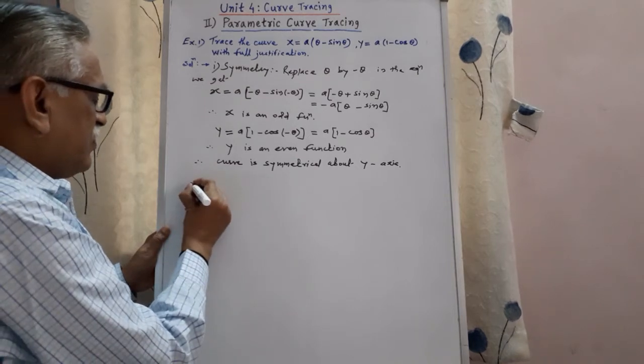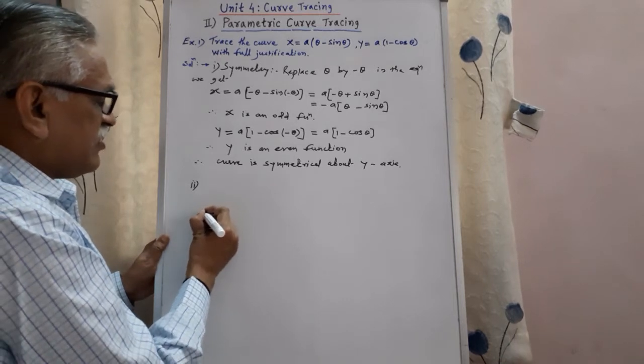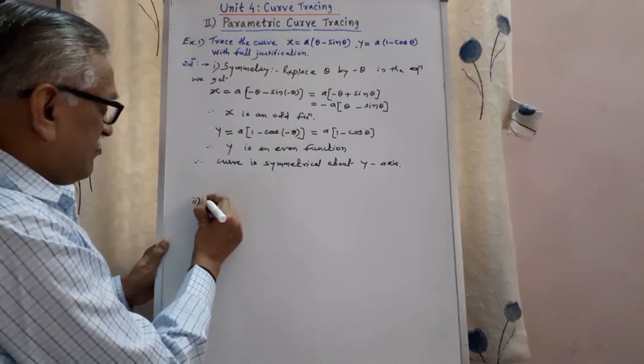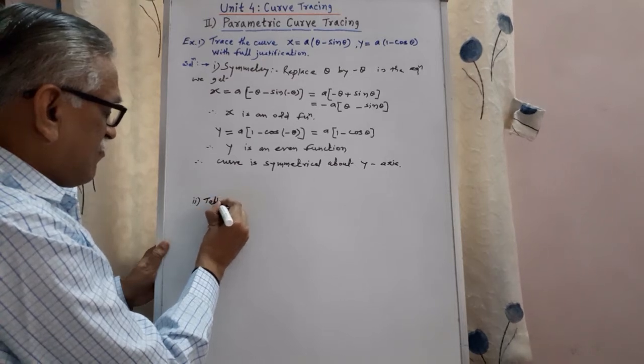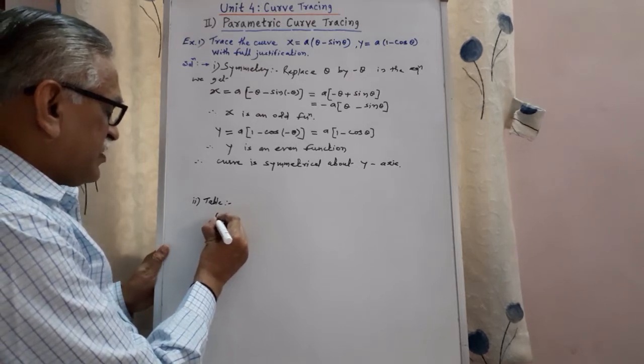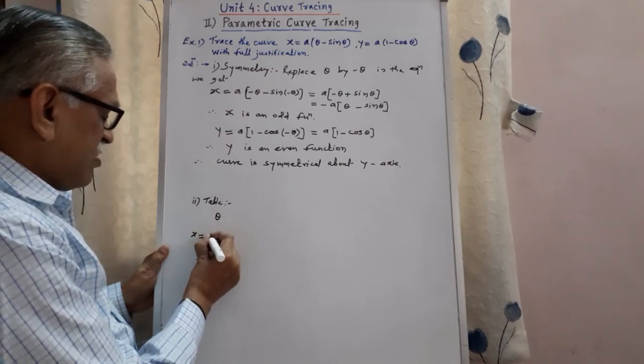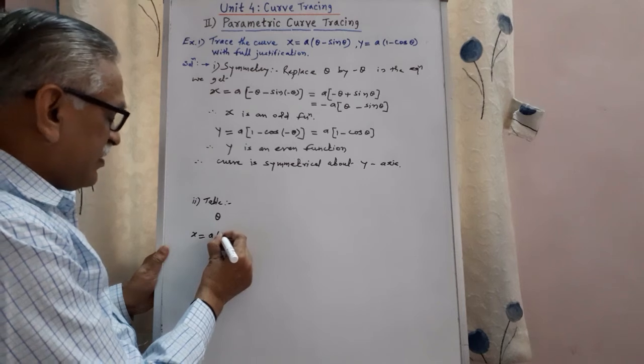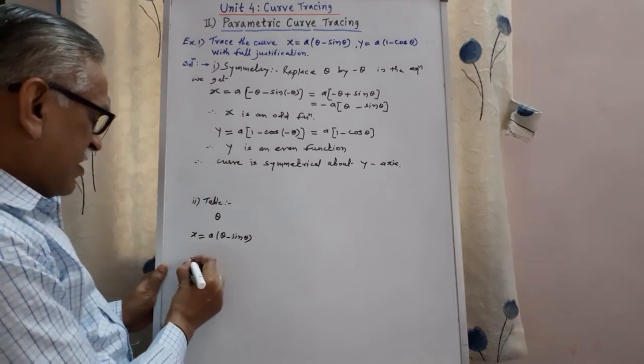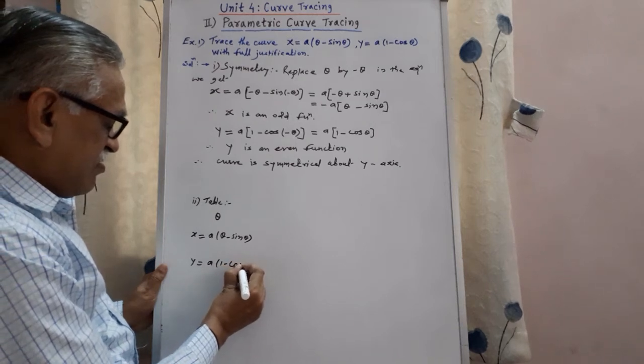Then we go for the second point, we have to make a table. We consider values of theta, the corresponding value of x, x equals a into theta minus sine theta, y equals a into 1 minus cos theta,